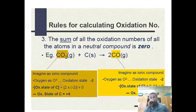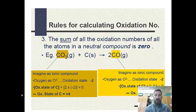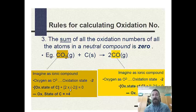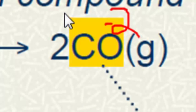From here on, we're just doing examples. In CO₂, oxygen is minus two; two oxygens give negative four, so carbon is plus four — sum is zero. In carbon monoxide (CO), oxygen is minus two so carbon is plus two. This would be a redox reaction because carbon's oxidation state changed from plus four in CO₂ to plus two in CO.